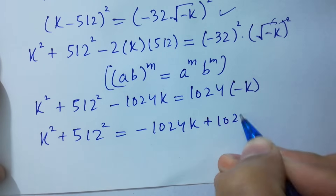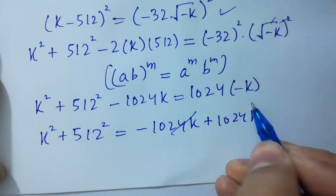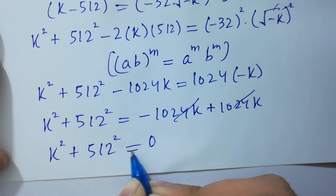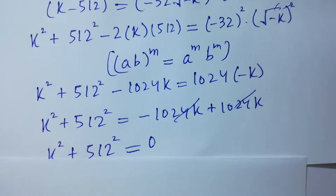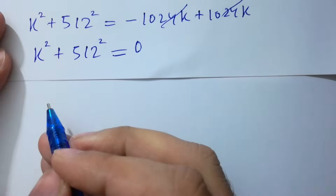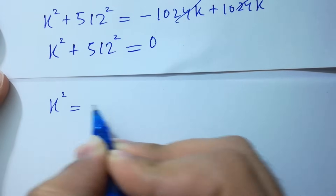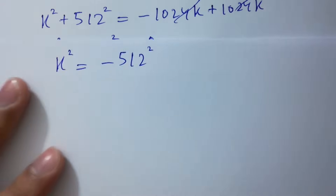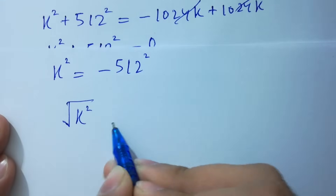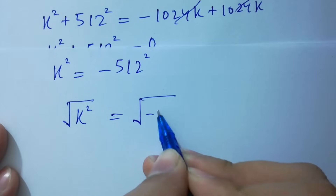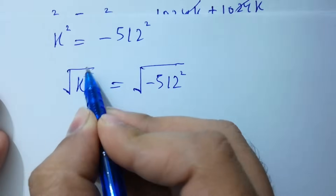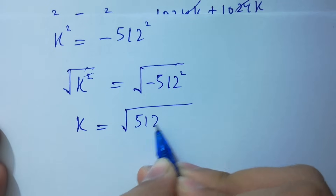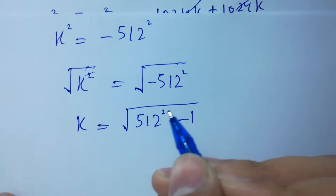Both minus 1024k terms cancel, leaving k squared plus 512 squared equals 0. In the next step, k squared equals minus 512 squared. Now take square root on both sides: square root of k squared equals square root of minus 512 squared, and the square cancels from the square root.